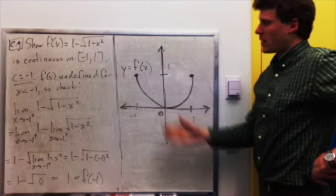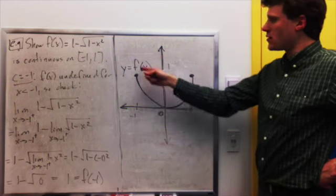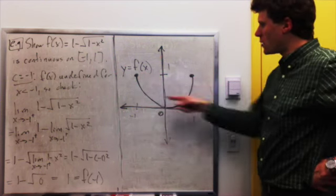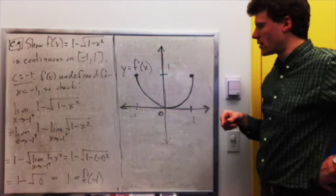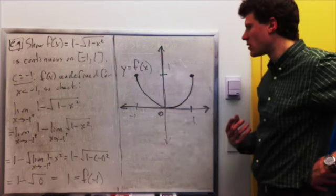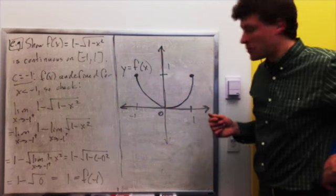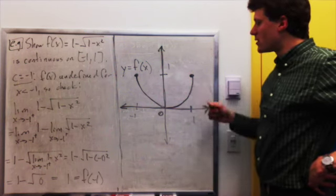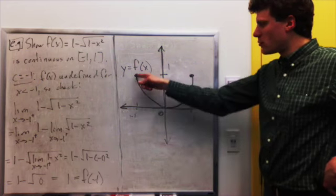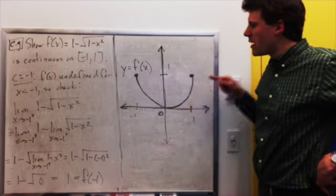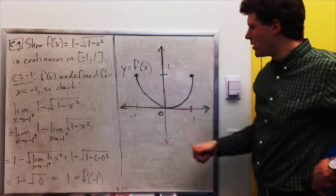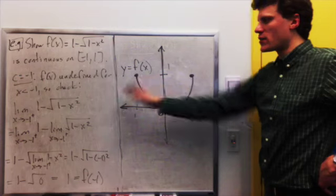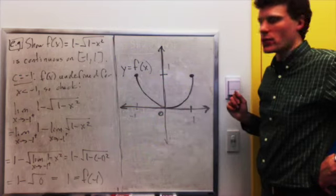I'll let you do the computation when c equals 1 — figure out which side it needs to be continuous from and run through the computation. Here's the picture: this is y equals f of x. As you see, I can draw it without picking up my pencil from negative 1 to 1 — it just looks like a smile; it's actually an upside-down semicircle. This is continuous between negative 1 and 1. As I go to negative 1, I'm approaching from the right; as I go to 1, I'm approaching from the left. I don't care that it's undefined to the left of negative 1 or to the right of 1.